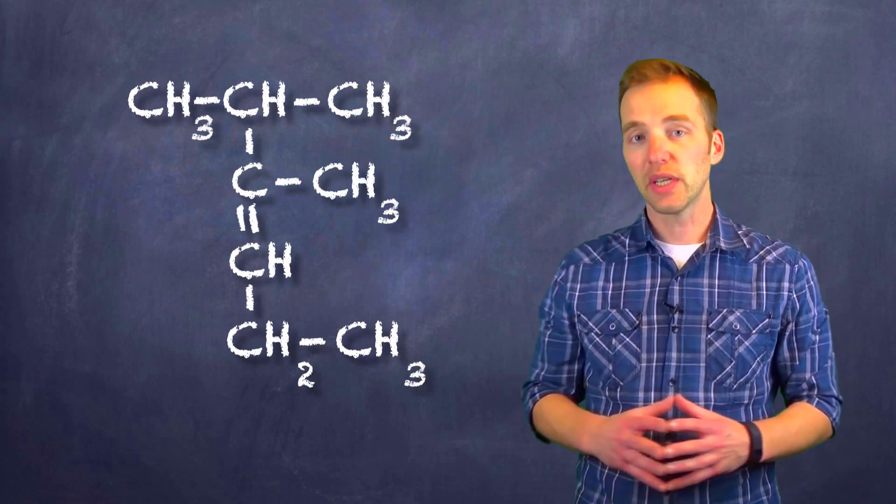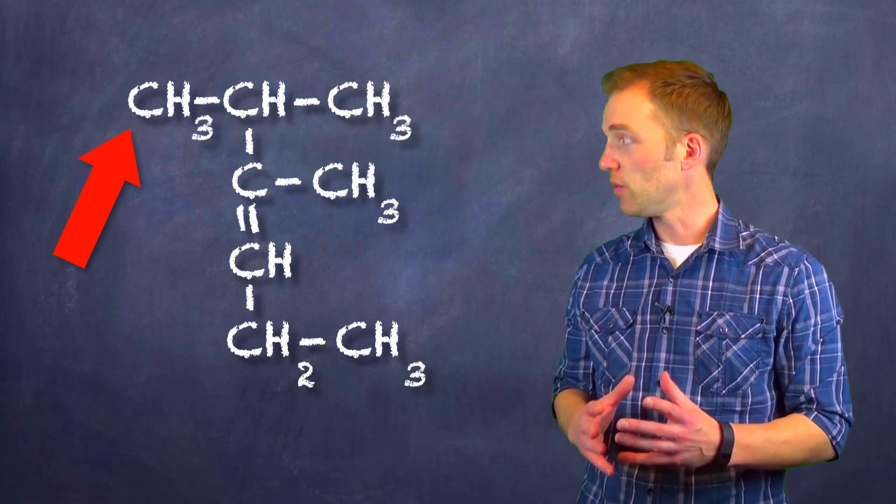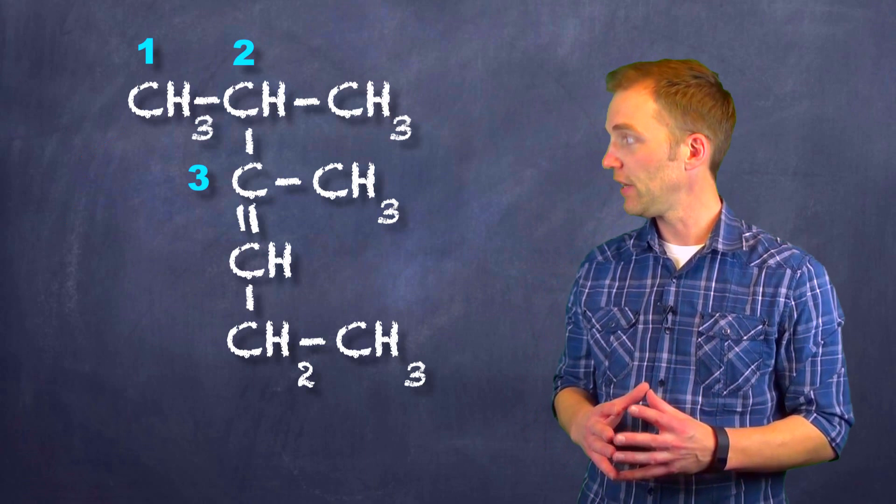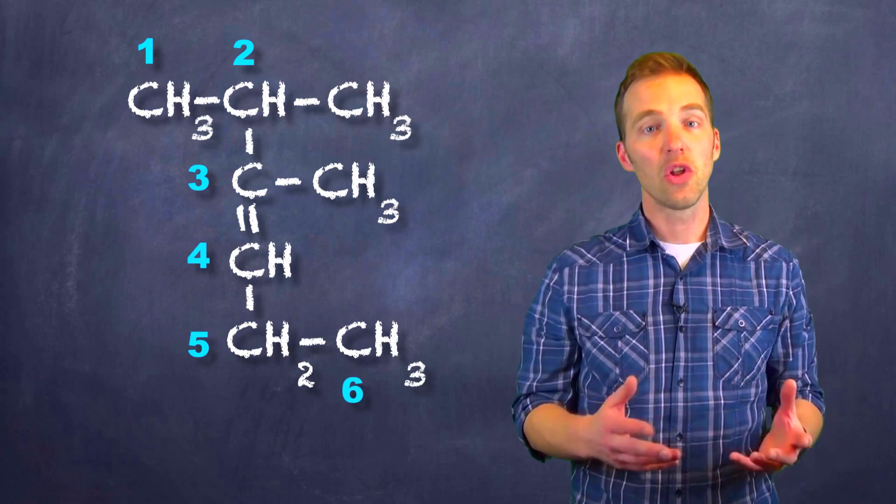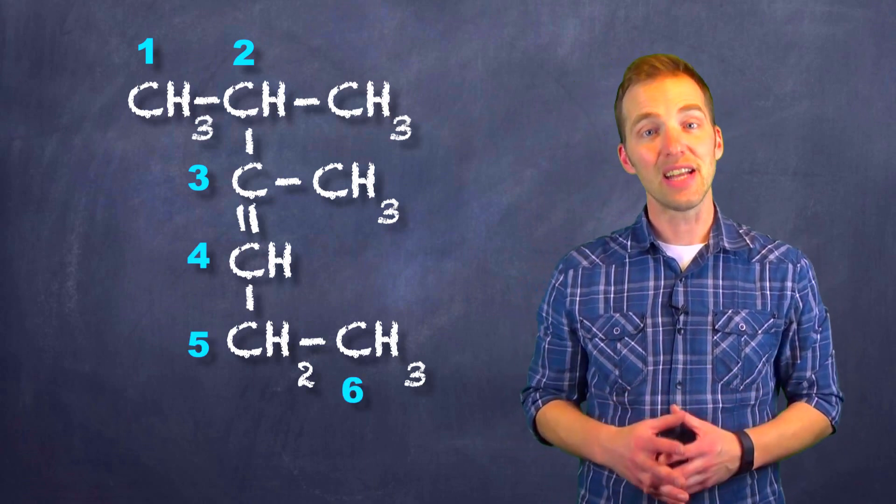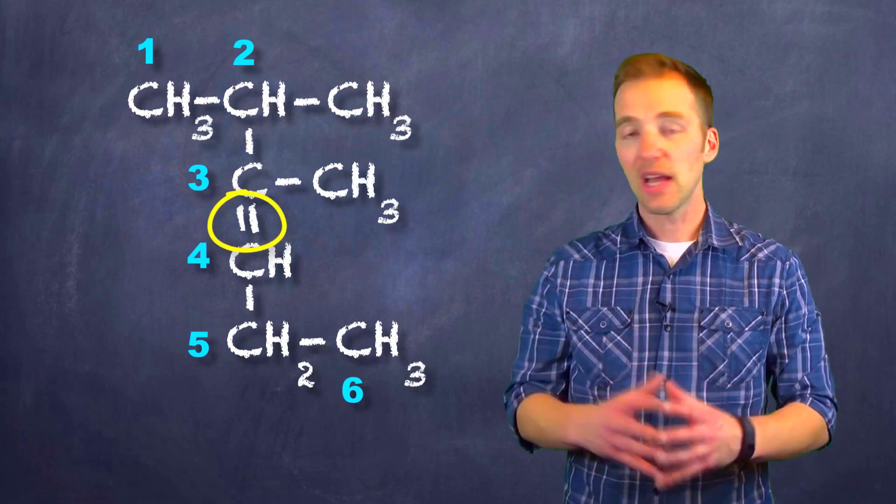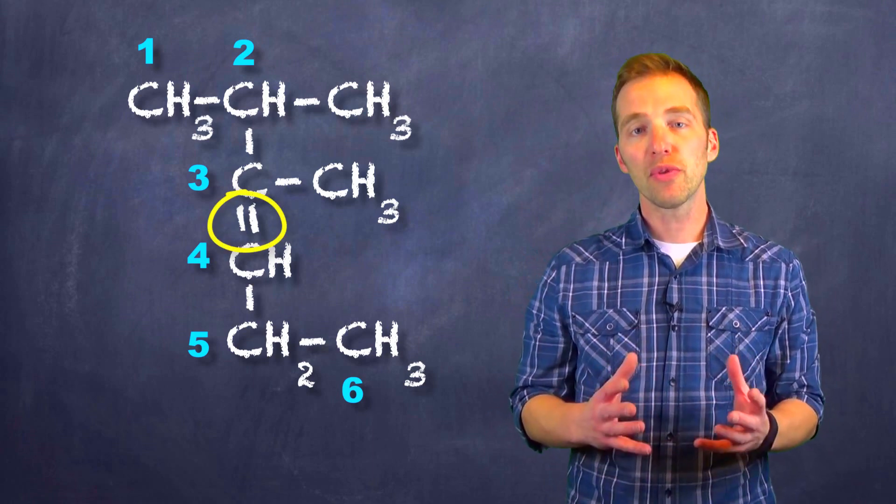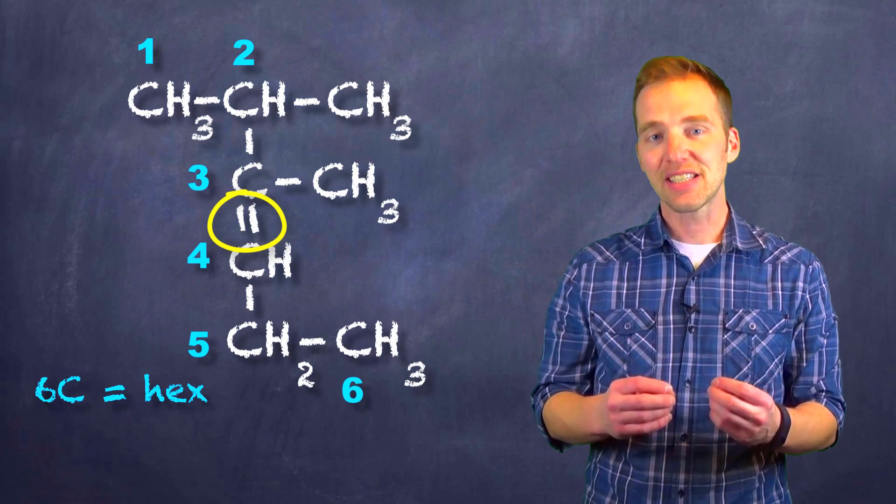So if we take a look at this structure, we can see that counting from this end, we have one, two, three, four, five, six carbons in the longest continuous chain that contains that multiple bond, in this case a double bond. So we would refer to this as a hexene.